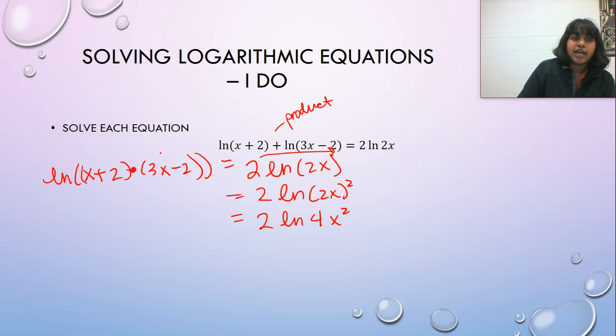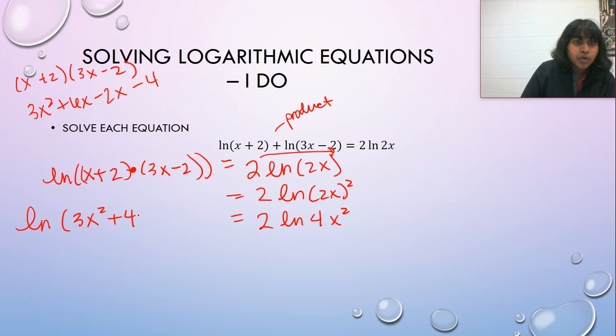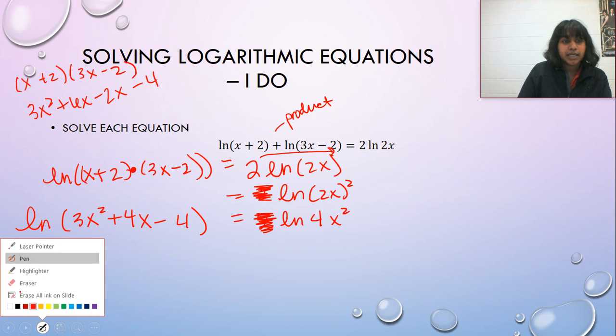On this side, I actually have to put these together. So X plus two and three X minus two becomes three X squared plus six X minus two X minus four, which ends up being the natural log of three X squared plus four X minus four. So now I have a natural log of something is equal to the natural log of something. That's a one to one that I've created. So I get to cancel out these natural logs. How nice and easy.